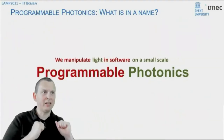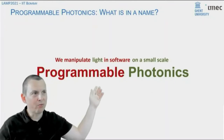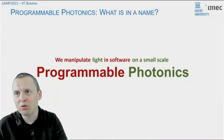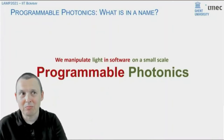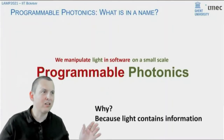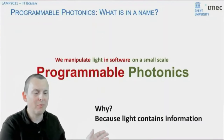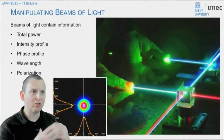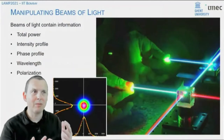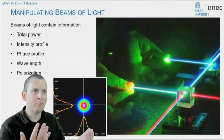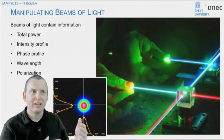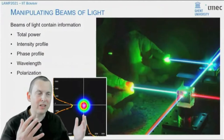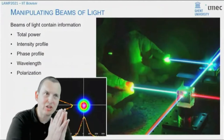Bring these two together and you manipulate light in software on a microscopic scale. The big question is: why would you want to do that? Well, there's a good reason. Light contains information in many forms. For instance, your beam of light has a certain power, which can be modulated over time. But it also has an intensity profile, a phase profile, a wavelength, and a polarization. So there's a whole lot of information just in one beam of light.